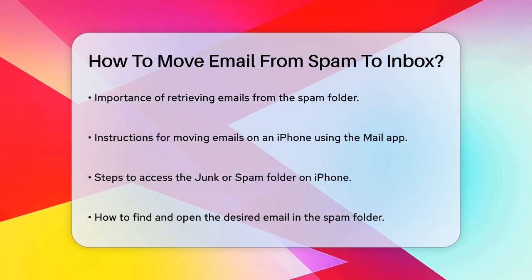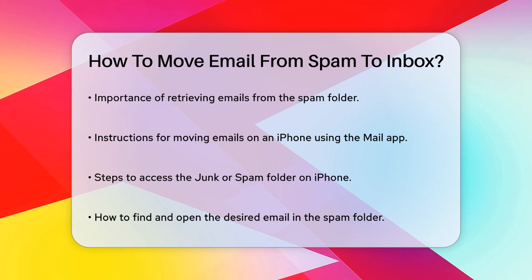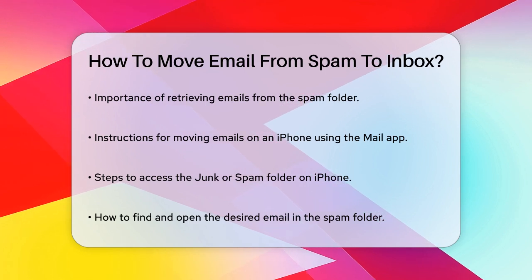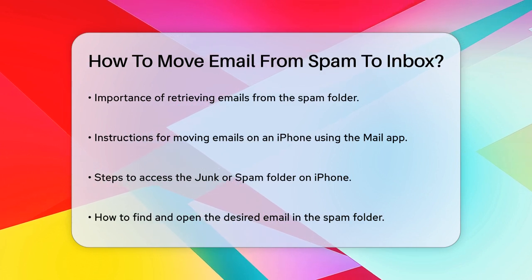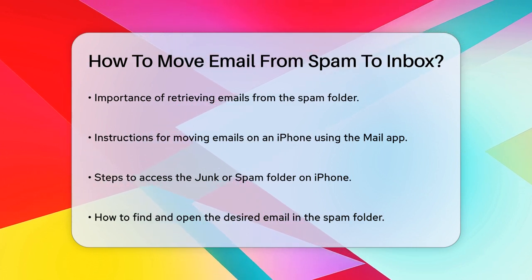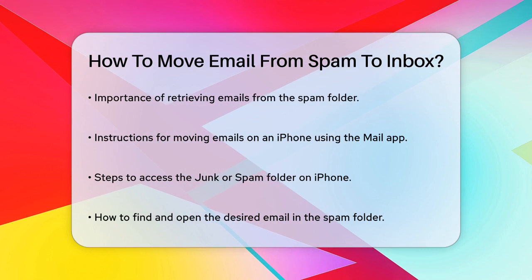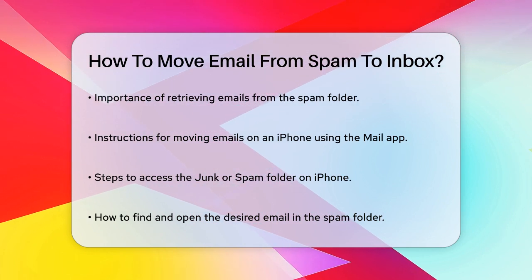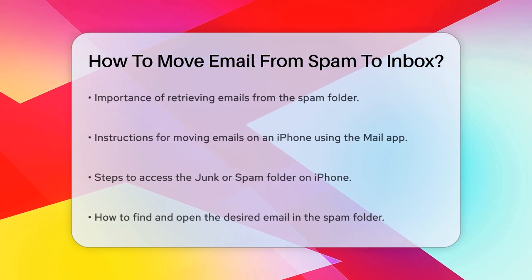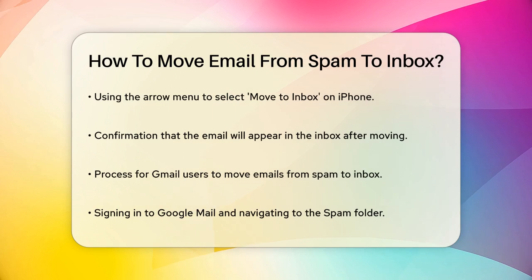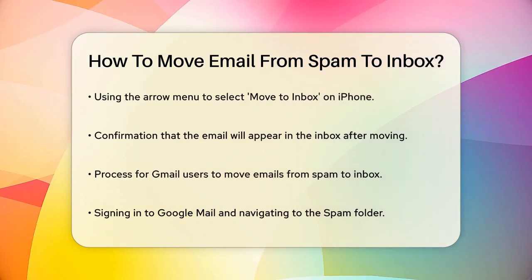Let's start with how to do this on an iPhone. If you're using the Mail app on your iPhone, you need to open the Mail app and navigate to the Junk or Spam folder. Once you're there, find the email you want to move and open it. At the bottom of the email, you'll see a little arrow. Tap on it and you'll get a menu. Select Move to Inbox from this menu and the email will be moved immediately.